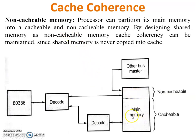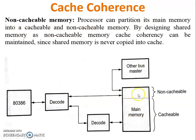In non-cacheable memory, there is no separate cache. Main memory is divided into two parts: a non-cacheable part and a cacheable part. The processor partitions its main memory this way. By designing shared memory as non-cacheable, cache coherency is maintained, since shared memory is never copied into the cache. There is no need to copy between cacheable and non-cacheable regions because it is a single hardware unit.